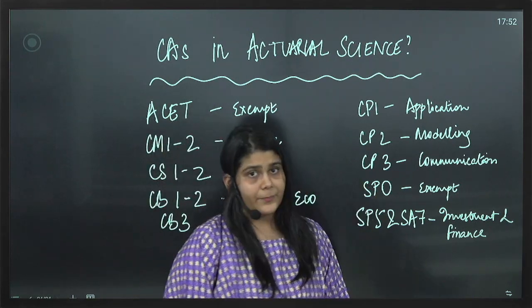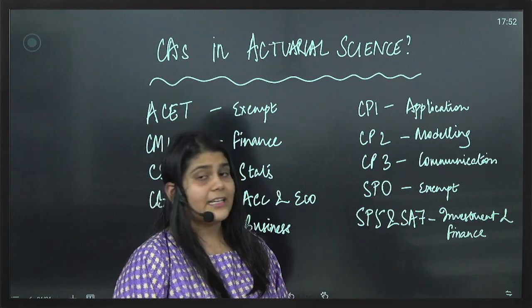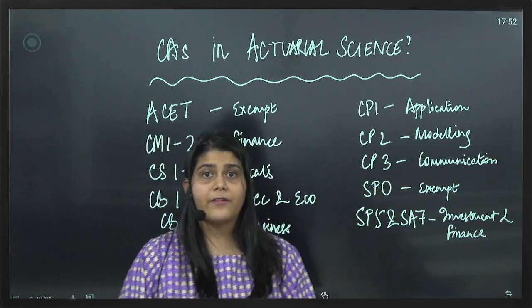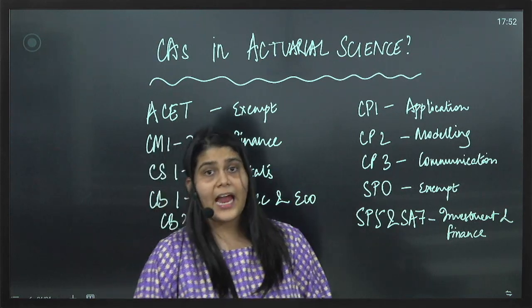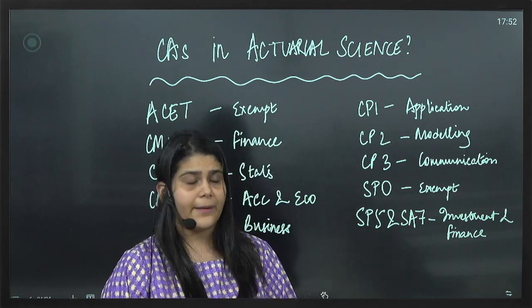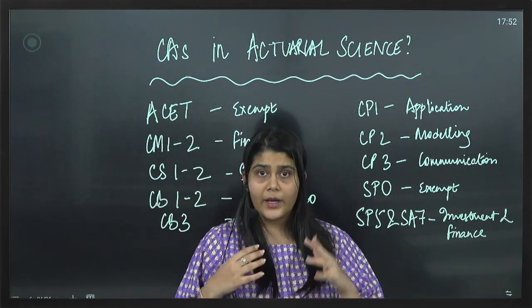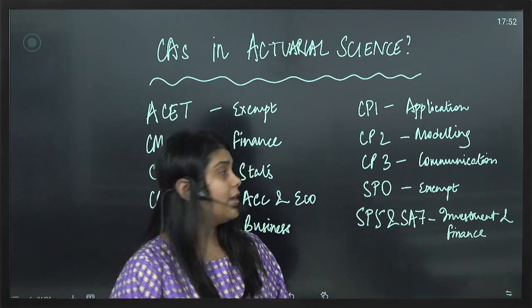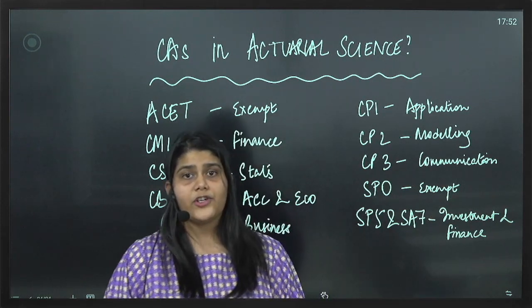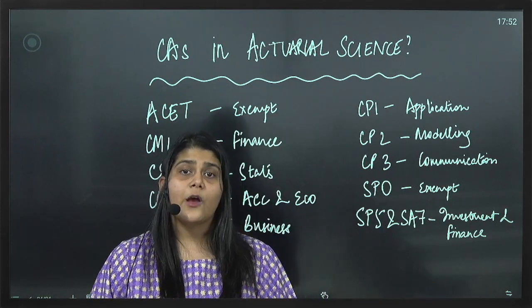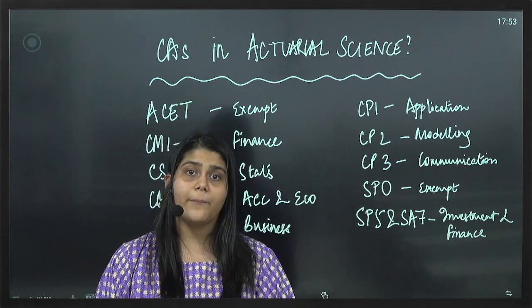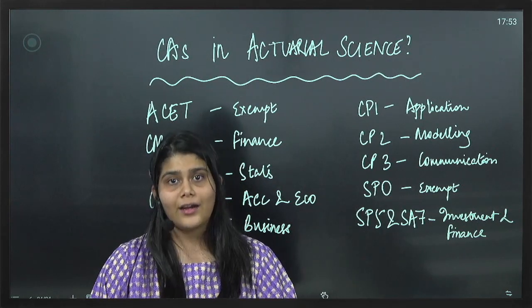CP2 and CP3, again two papers where CAs can have it really easy. CP2 is a modeling paper where we will have to build models and write audit trails for them on Excel. So again this is something as Chartered Accountants we have always done. CP3 is communication, they test our skills wherein how easily and efficiently we are able to communicate the points to our clients.